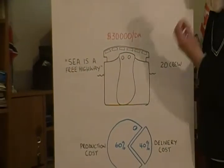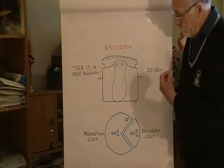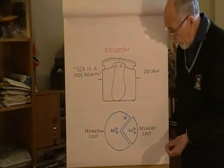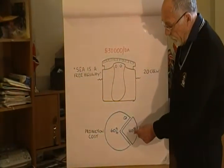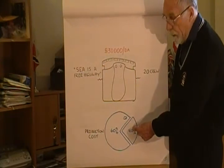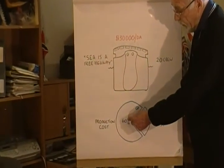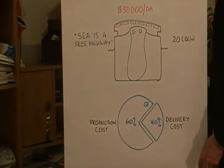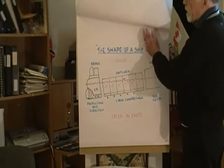This trade that we were talking about — the delivered costs of getting it there, moving it by sea — is dictated by the delivery cost and the production cost. The production cost is about 60% and the delivery cost is about 40%. That's a very important part of logistics.